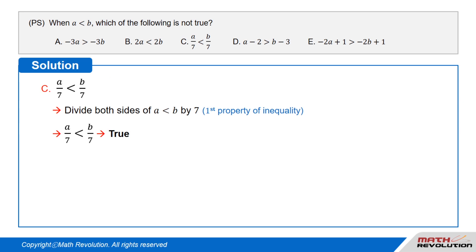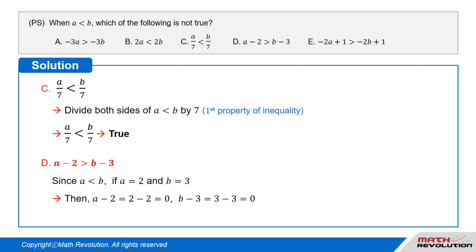Option C: a over 7 is less than b over 7. Let us apply the first property of inequality, which is the positive rule. That is, when we divide an inequality by a positive number, the inequality sign does not change. So if we divide the given inequality a is less than b by 7, we get a over 7 is less than b over 7. Thus this option is true.